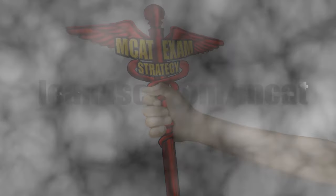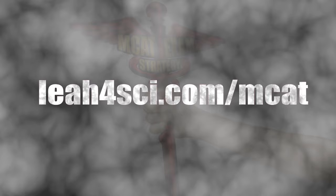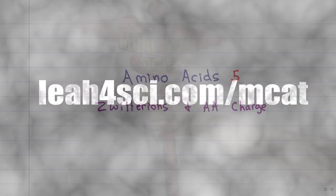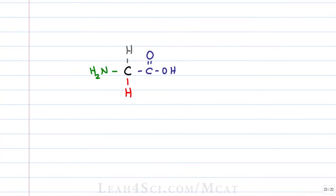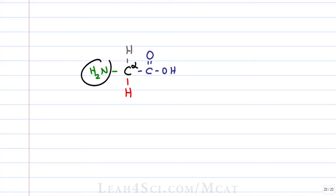Leah here from leah4sci.com/mcat, and in this video we're going to look at zwitterions and finding the charge of an amino acid. Amino acids are often drawn in the neutral form, such as glycine represented here. We have the alpha carbon with the hydrogen and side chain, the alpha carboxy group, and the alpha amine — that's how we get amino acid: an amine and an acid.